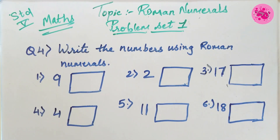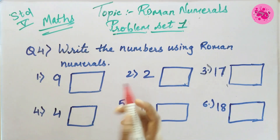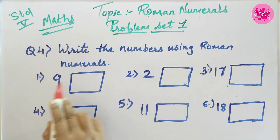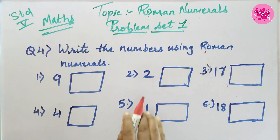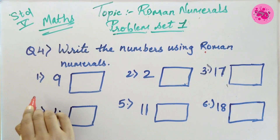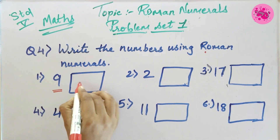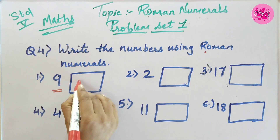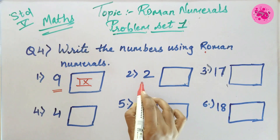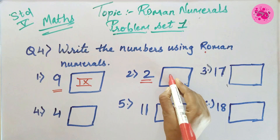Question number 4: Write the numbers using Roman numerals. Here a number is given and we have to write the Roman numeral. Number 1: The number 9 is given, so the answer is IX (I and X). Number 2: The number 2 is given, so the answer is II.